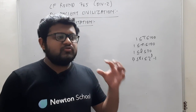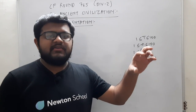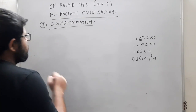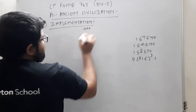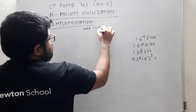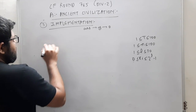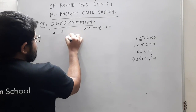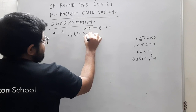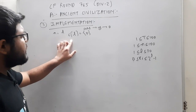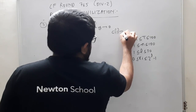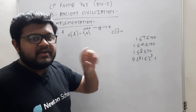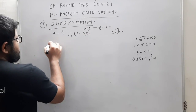Ab agar implementation ki baat karein, toh sabse pehle 0 se lekar L-1 tak jitnee bhi positions hain, wahaan kitnee bits set hain aur kitnee unset hain, woh hame calculate karna padega. Toh sabse pehle hum ek answer variable lete hain — basically isme y ki value store karenge — aur isko initialize kar deta hun 0 se. Phir ek test case ke liye mere paas N aur L ki value hogi. Main C of L le leta hun, aur initially sabhi indices ki value 0 kar dunga. C of I denote karega ki in N numbers mein se kitne aise number hain jisme ki Ith bit set hai.